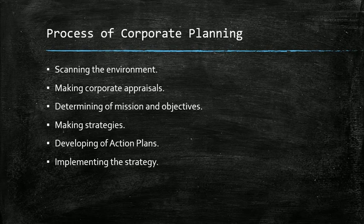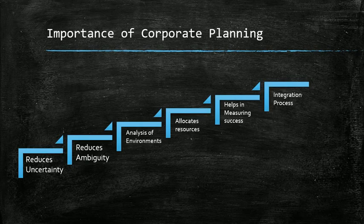For implementation, corporate strategy should be translated into medium-range functional and short-range operation plans. Effective implementation requires designing a suitable organizational structure, an effective management system, and proper organizational culture to ensure employee motivation. Now, let's move towards why people do corporate planning — the benefits and importance of corporate planning. It reduces uncertainty, as you are planning for your future.